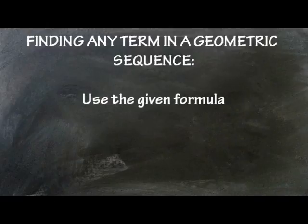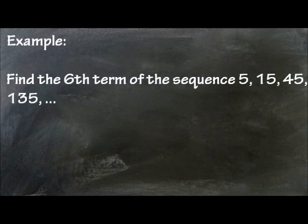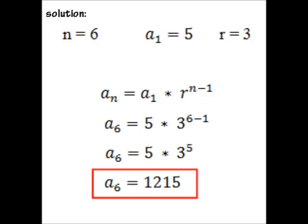To find any term in a geometric sequence, a formula is used: a sub n equals a sub 1 times r raised to n minus 1. Find the sixth term of the sequence, n is 6, a sub 1 is 5, and r is equal to 3. We get a sub 6 equals 5 times 3 raised to 6 minus 1. The answer is 1215.